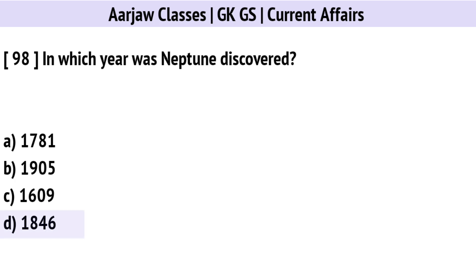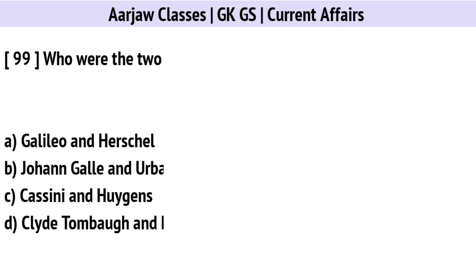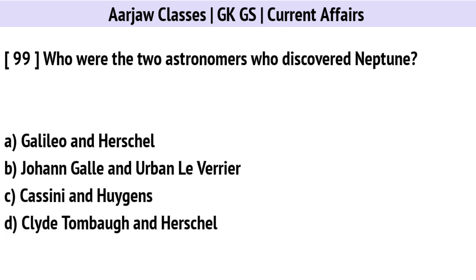In which year was Neptune discovered? Correct option is D: In 1846.